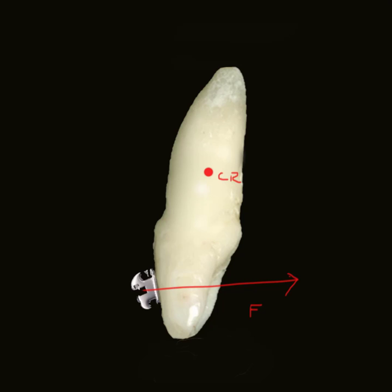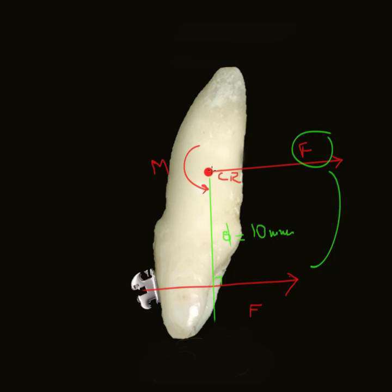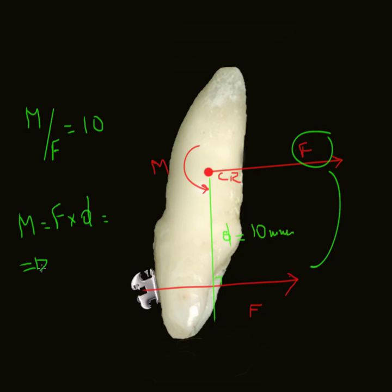If you put a force F at the bracket away from the center of resistance, there is a distance — in this case 10 millimeters. If you calculate the force system at the center of resistance, you get the same force F that was at the bracket, but because the force is away from the center of resistance, you also get a moment. The moment-to-force ratio in this case is M over F equals 10, because the moment equals F times D, which means M over F equals 10.